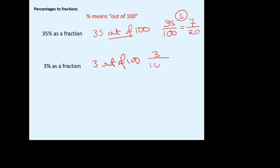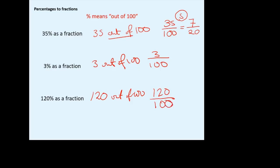3/100 can't be simplified — that's all there is to that. And finally 120%: it's still out of 100. I know it seems odd to have a percentage bigger than 100, but there's nothing stopping you. 120/100 simplifies — both can be divided by 20 — giving 6/5. I'm going to leave that as an improper fraction. If you're asked for a mixed number, you'd write it as one and one fifth for an extra mark.